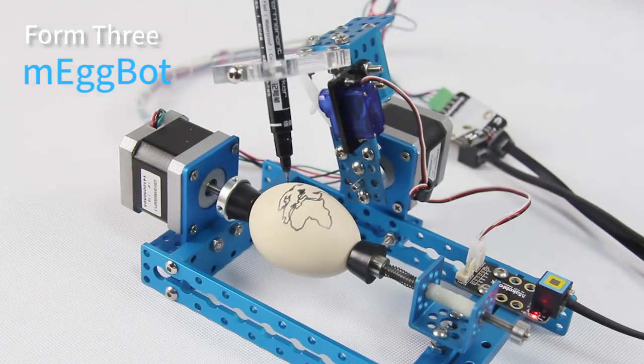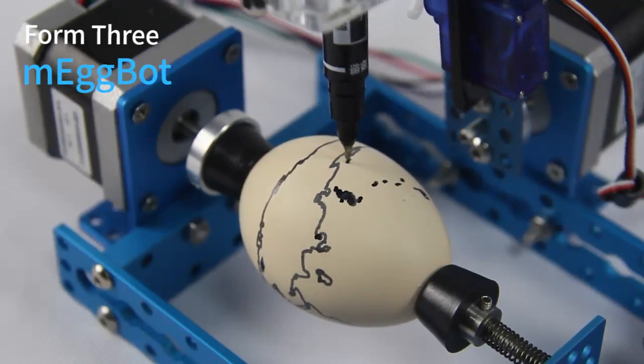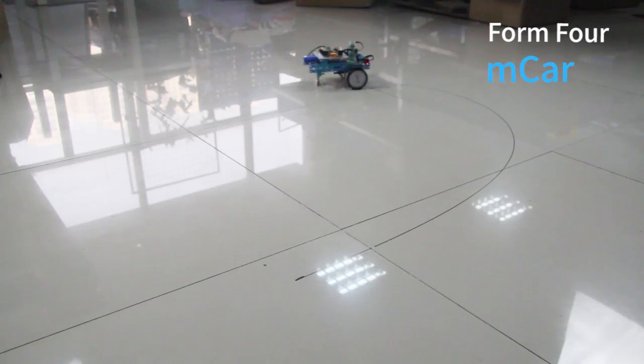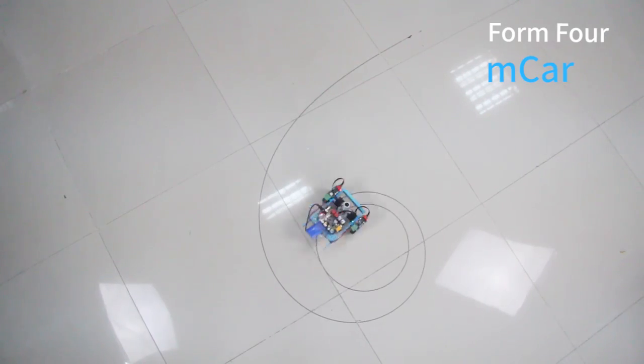The third one is M-Eggbot, which could help you make your own Easter egg pretty. And the last one is M-Car, the infinite drawbot on the ground.